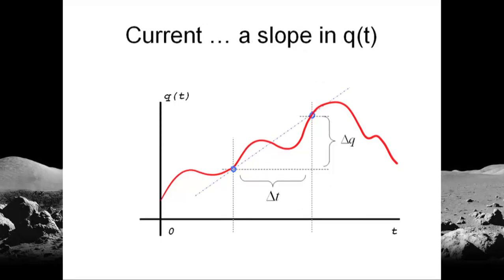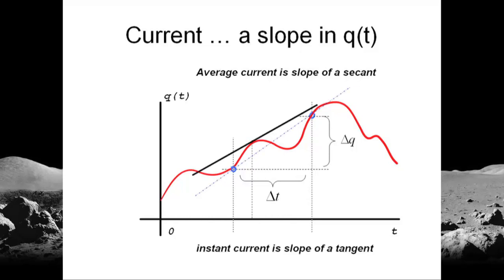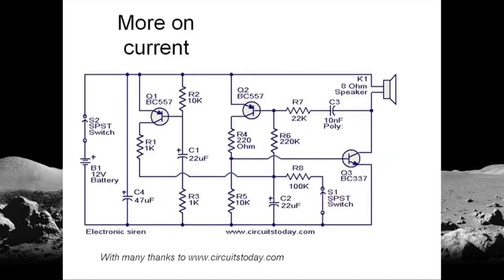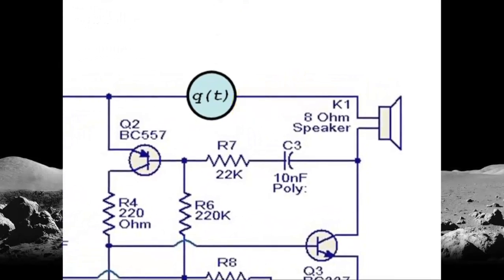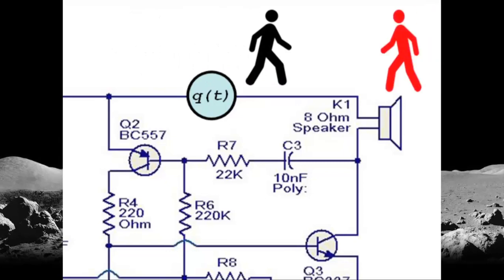Well, we have learned to identify currents with a slope, a slope in the graphic of q versus t. The average current is a slope of a secant, this one. And the instantaneous current is a slope of a tangent like this one. A bit more. Take that circuit with thanks to www.circuitstoday.com. If we want to know the current flowing through that speaker, what we do is we replace part of that wire with an instrument like this. That instrument will be counting positive coulombs flowing to the right and negative coulombs flowing to the left. The sum of them will be q.